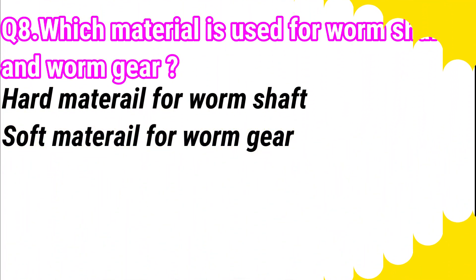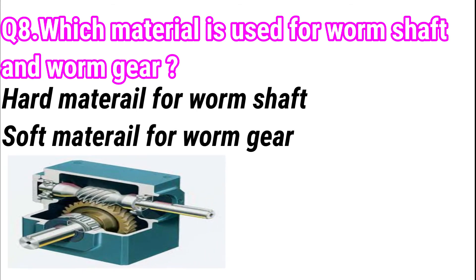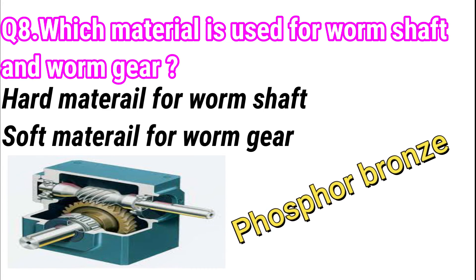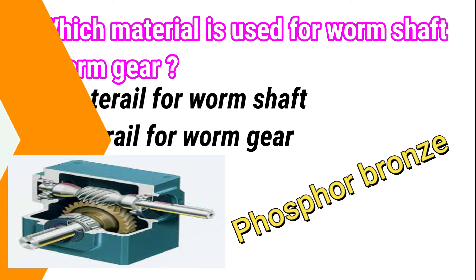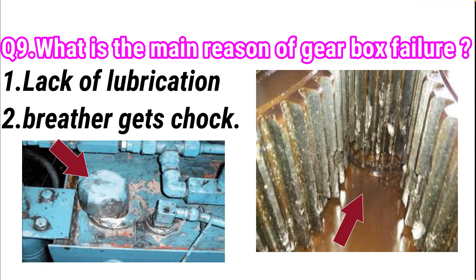The next question: which material is used for the worm shaft and worm gear? A hard material is used for the worm shaft, whereas a soft material is used for the worm gear. Specifically, phosphor bronze is widely used for worm drives in order to reduce wear, which would be excessive with cast iron or steel.